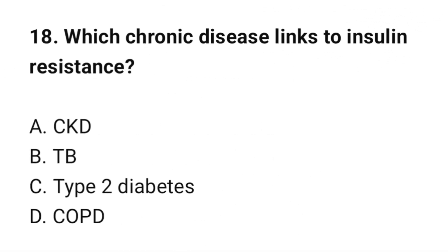Question number 18: Which chronic disease is linked to insulin resistance? The correct option is C: Type 2 diabetes.